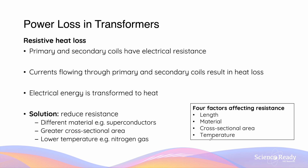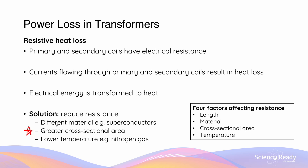Knowing these four factors, we can develop a few solutions. We can use a material with lower resistance, such as superconductors, which have zero electrical resistance at a certain temperature. We can use coils with greater cross-sectional area, which also lowers resistance. We can lower the temperature of the transformer coils using nitrogen gas. However, only using coils of greater cross-sectional area is truly feasible, as superconductors are expensive and require low temperatures, and maintaining low temperatures with nitrogen gas is also more expensive and less economical.